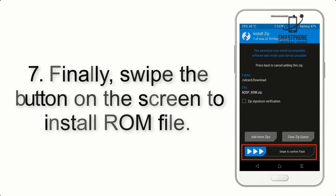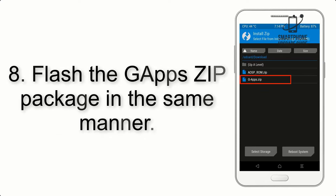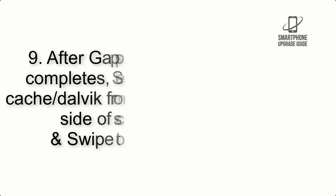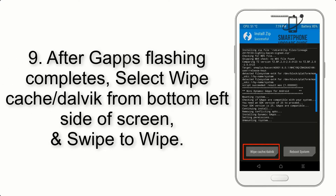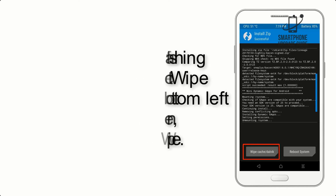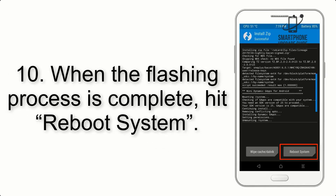Step 7: Swipe the button on the screen to install the ROM file. Step 8: Flash the GApps zip package in the same manner. Step 9: After GApps flashing completes, select Wipe Cache and Dalvik from the bottom left side of the screen and swipe to wipe.